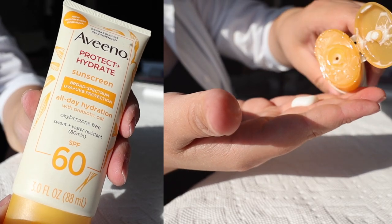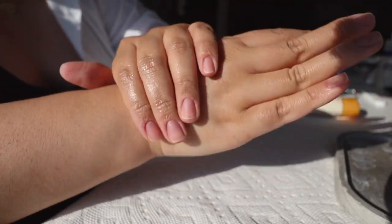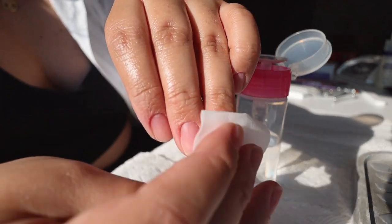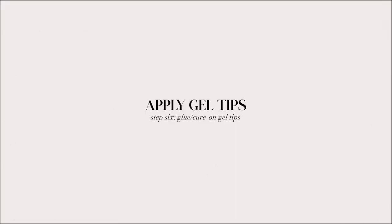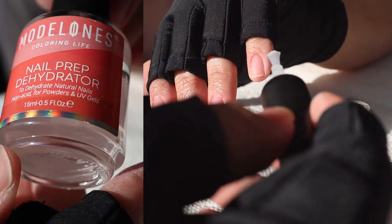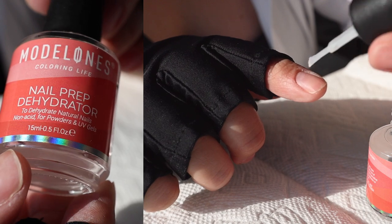In this step, I applied sunblock to my hands and I also put on some UV protection gloves to help protect my skin from the UVs while I cure my nails using the LED light. I applied this nail prep dehydrator to my nails in order to remove any oils that might inhibit the gel tips application process.